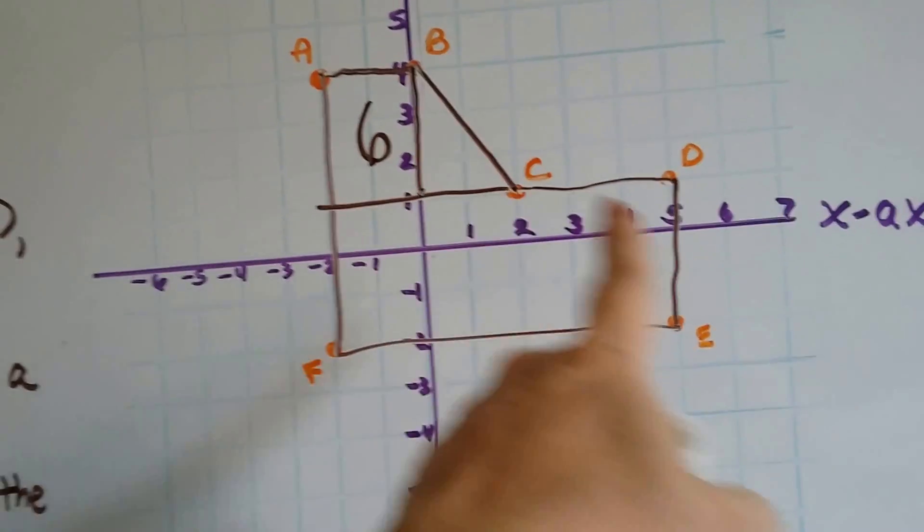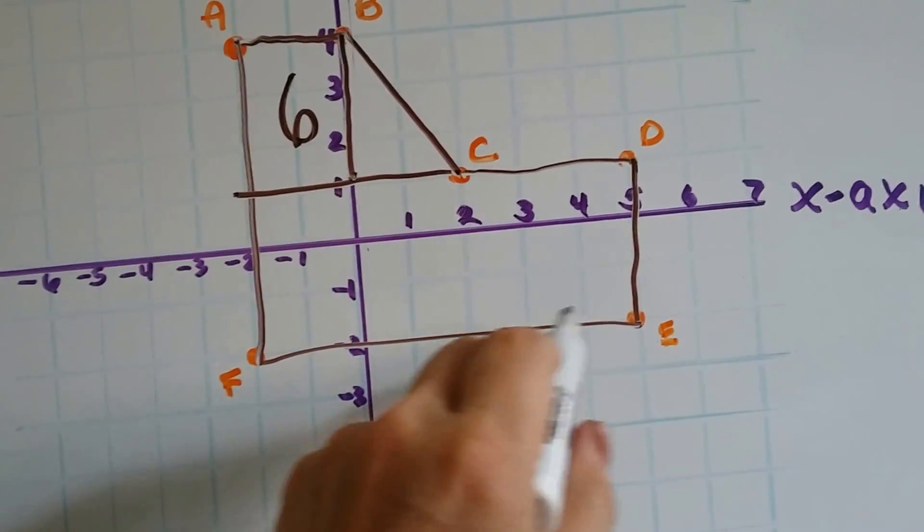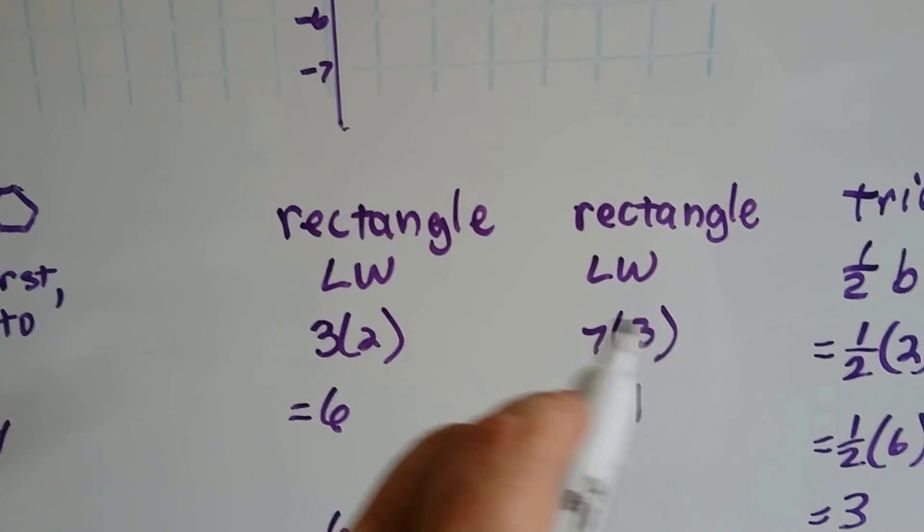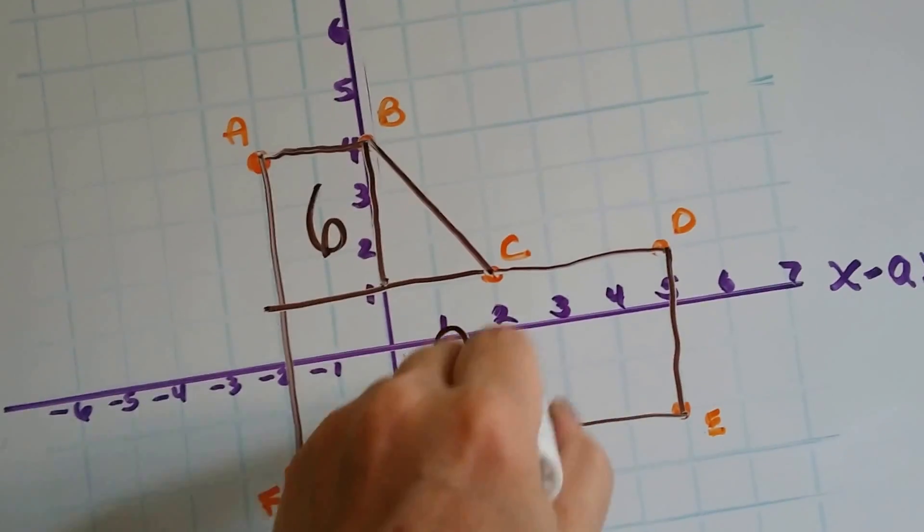I see a big rectangle here. See it? And it's 1, 2, 3, 4, 5, 6, 7 squares, and 1, 2, 3 squares. So, that's 7 by 3. That's 21 squares. So, this big thing is 21.